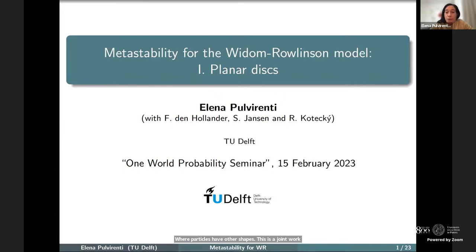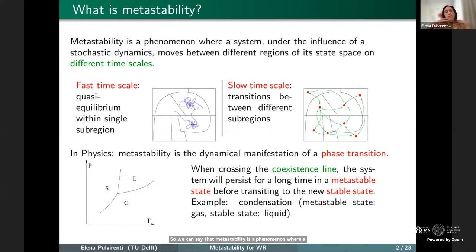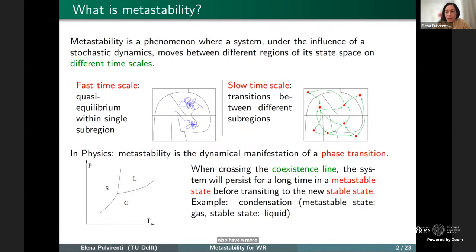Let me start from a general overview about what metastability is. Metastability is a phenomenon where a system, under the influence of some stochastic dynamics, is moving on different regions of the state space on different time scales. Normally, the system reaches quasi-equilibrium very fast in a single sub-region, but on a slower time scale we see transitions between different sub-regions. The presence of these two time scales where the system behaves differently denotes metastability.